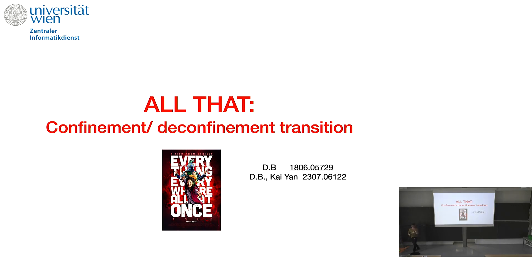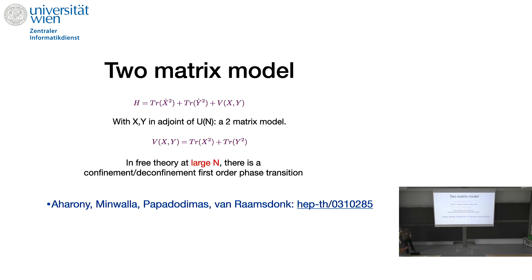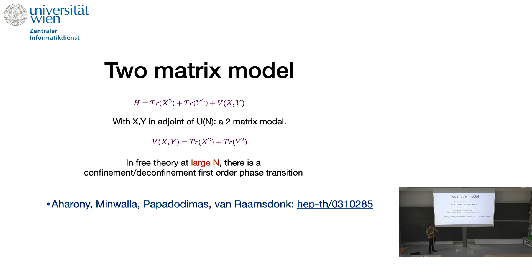Now we're going to talk about Young tableaux all the way — the two-matrix model. X and Y are in the adjoint. I'll choose the quadratic potential, so it's solvable. In free theory at large N, for gauge invariant states invariant under the adjoint action on X and Y simultaneously, there is a confinement-deconfinement first-order phase transition — or what people call a weak first-order transition — because on the exit side of the transition you get non-trivial critical exponents. There was a paper in 2003 by path integral methods using the Polyakov loop that showed this transition.